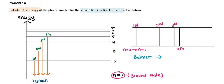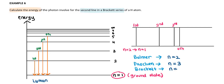For the Balmer series, the electrons fall from higher energy levels to n equal to 2. So the first line of the Balmer series is from 3 to 2, the second line is 4 to 2, the third line is 5 to 2, and so on. For the Paschen series, electrons fall to n equal to 3. For the Brackett series, it falls to n equal to 4. And for the Pfund series, it falls to n equal to 5.